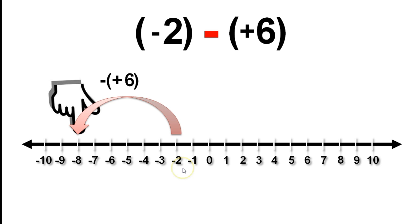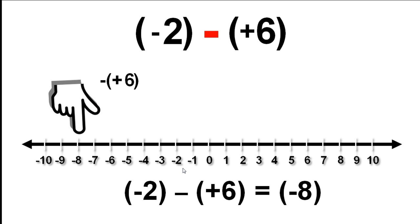we move down the number line. Or, you could say, we move to the left along the number line. Because we are subtracting positive 6, we move 6 to the left. This is what the operation of subtracting positive 6 looks like.